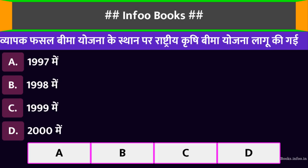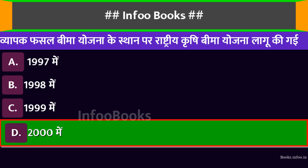व्यापक फसल बीमा योजना के स्थान पर राष्ट्रीय कृषि बीमा योजना लागू की गई। Option A, Option B, Option C, Option D: दो हजार में। सही विकल्प है: दो हजार (2000) में।